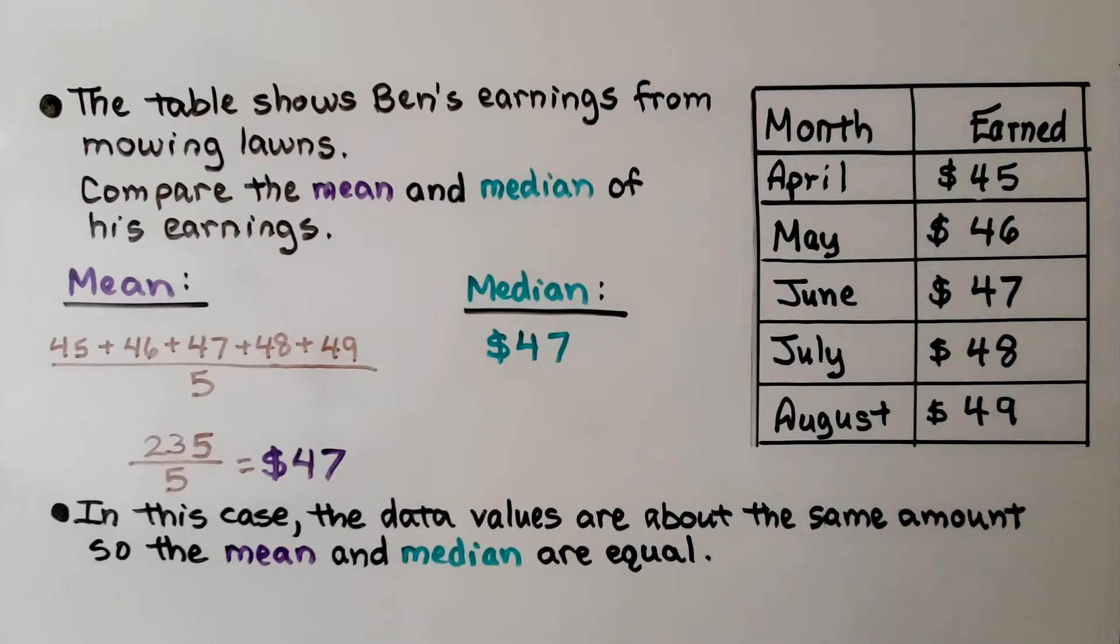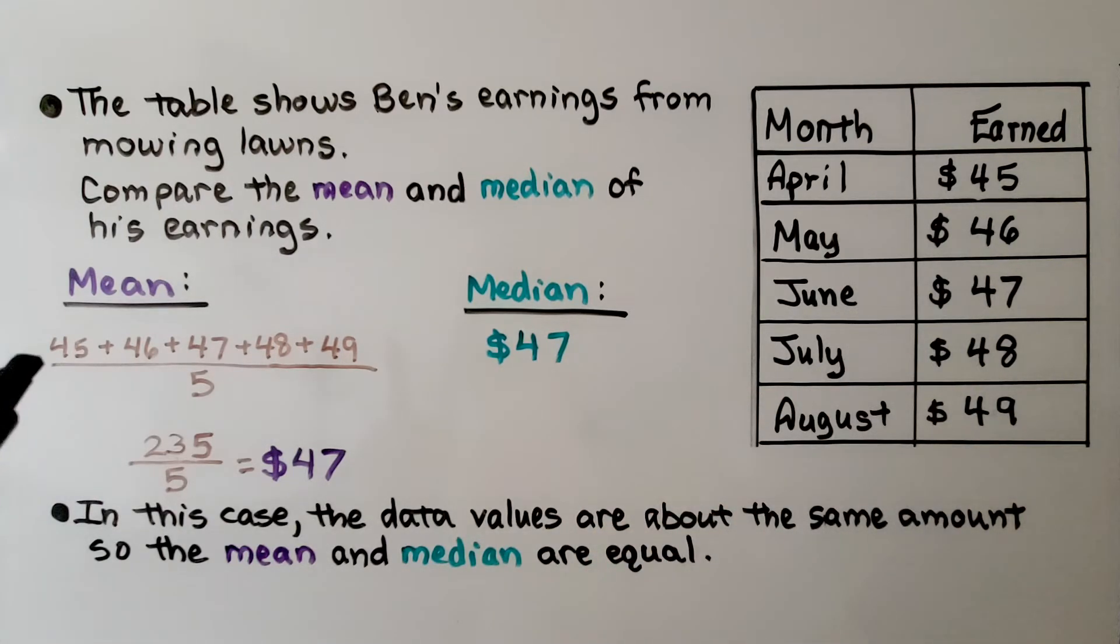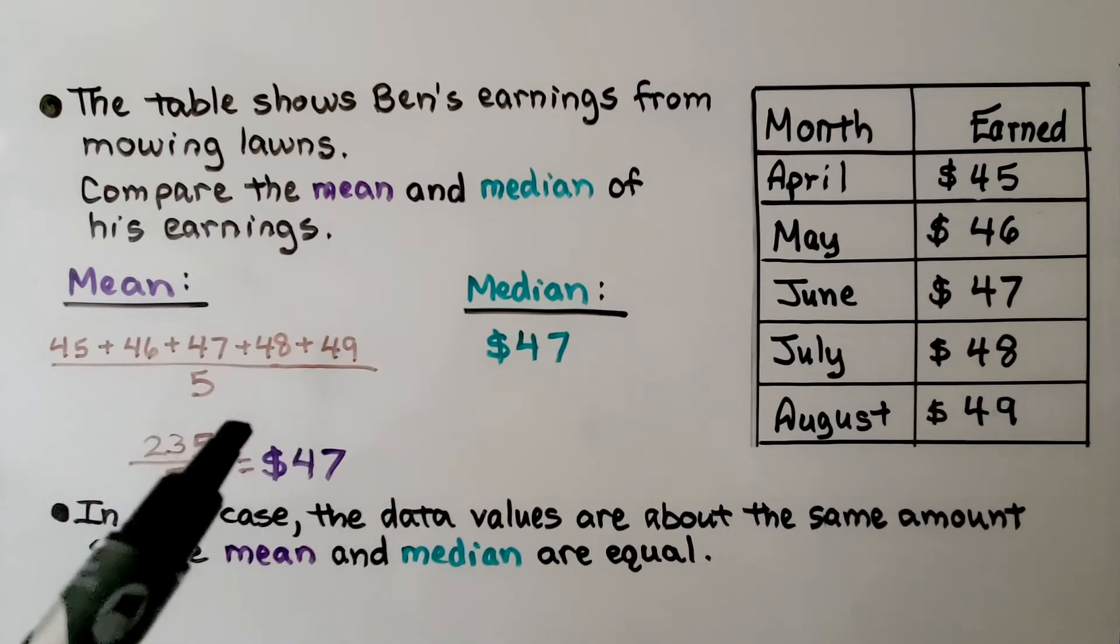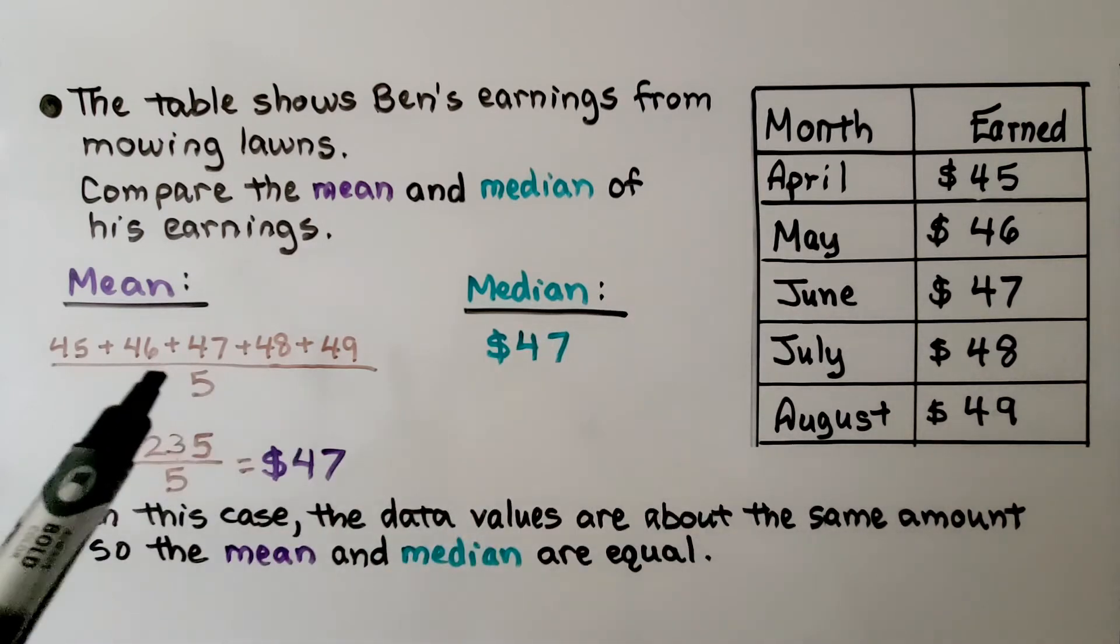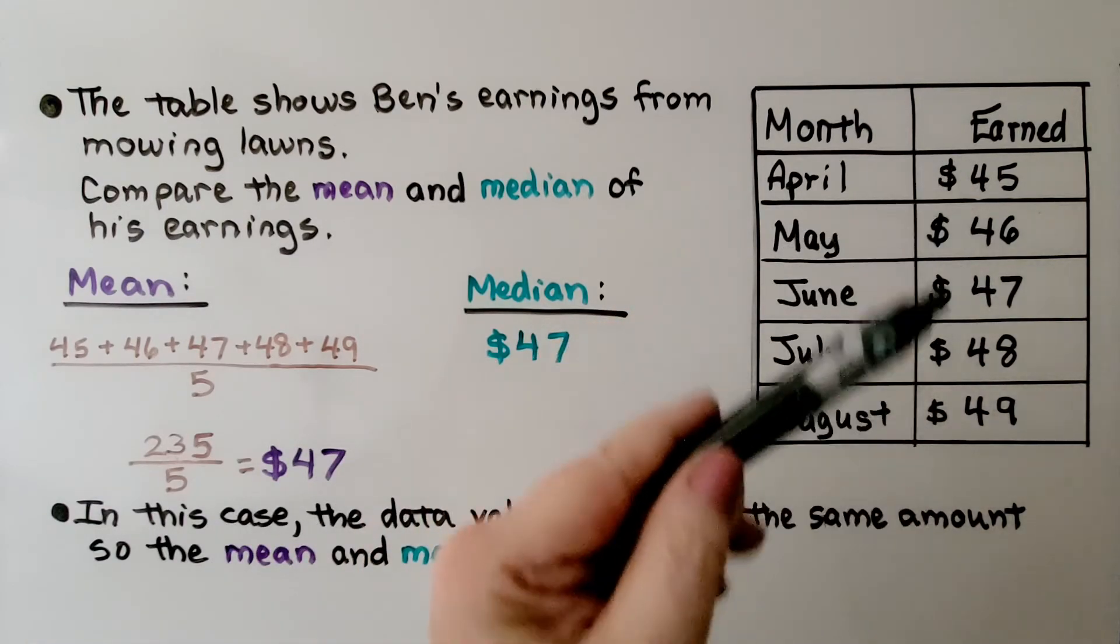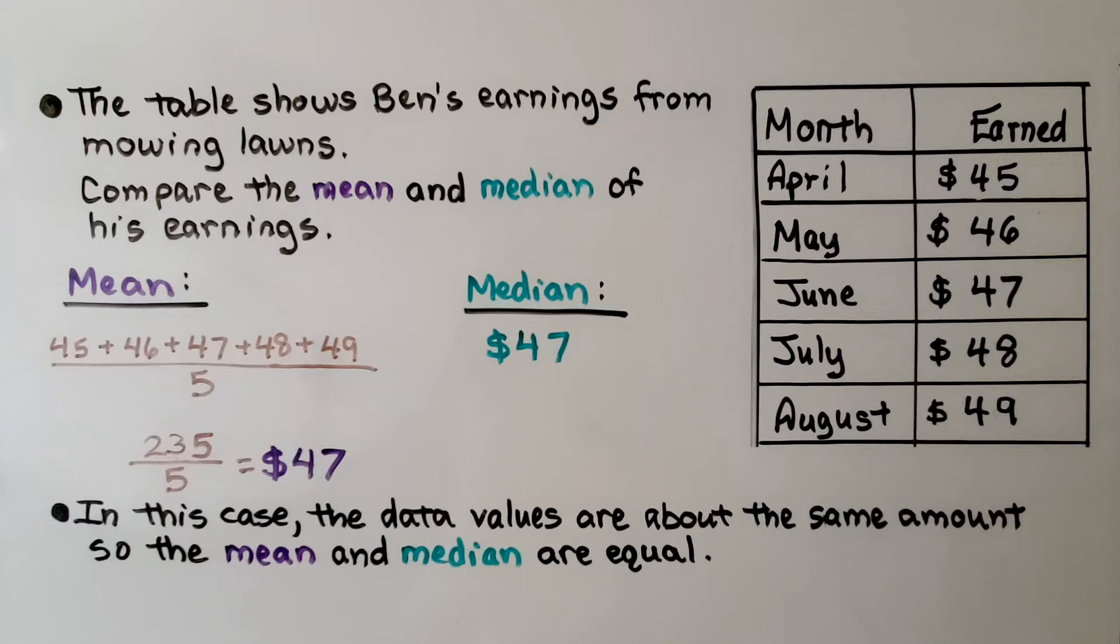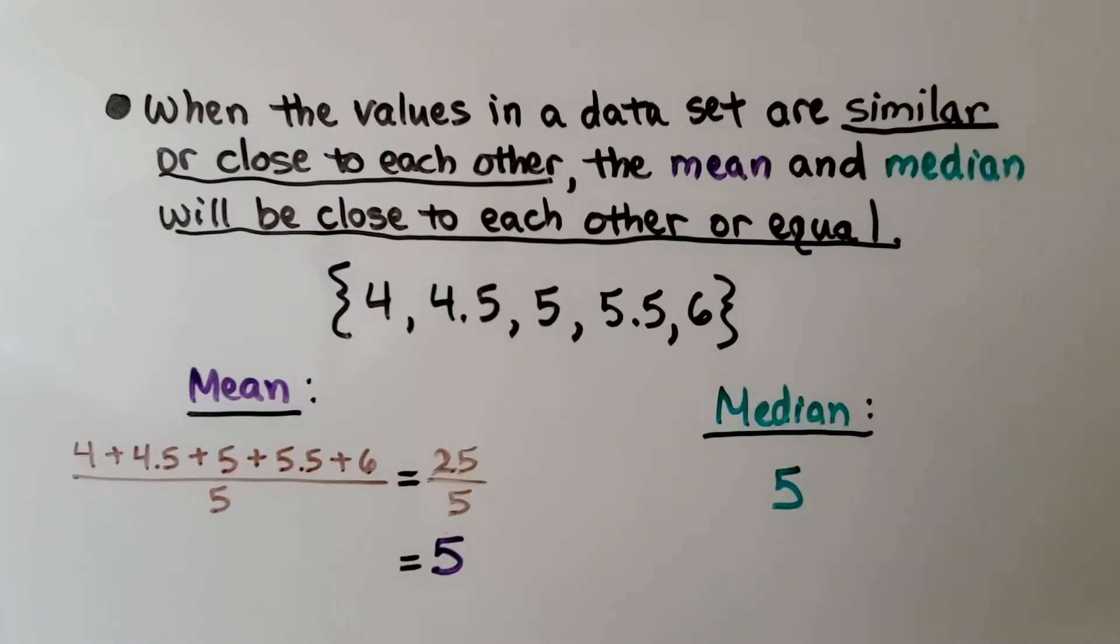This table shows Ben's earnings from mowing lawns, from the months of April to August and how much he earned. Compare the mean and median of his earnings. Now if you look, they're pretty close together. The amounts, we add 45 plus 46 plus 47 plus 48 plus 49. And because we have 5 sets of data, we're going to divide it by 5. We get 235 divided by 5, which is a mean of $47 a month. And if we do the median, it's already in order from least to greatest. The median would be the center number, which would be 47. So in this case, the data values are about the same amount, so the mean and median are equal. When the values in a data set are similar or close to each other, the mean and median will be close to each other or equal.